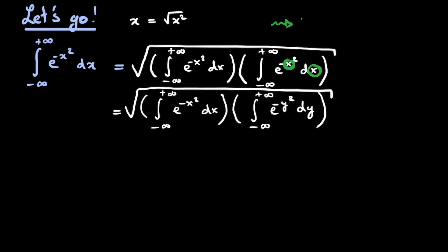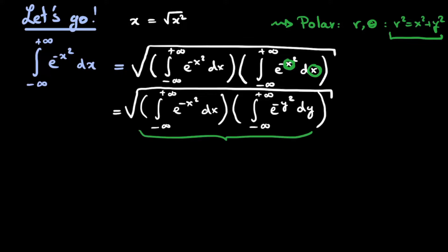Remember that to solve this integral we want to go to polar coordinates, where r and theta are a length and an angle. Remind yourself that r squared is equal to x squared plus y squared. Seeing this, it starts to look like we're doing something, because we have an x squared here and a y squared here. We can simply pull these two integrals together and use the fact that e to the power of a multiplied by e to the power of b is simply e to the power of a plus b.